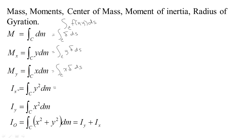Then we talked about second moments. These first moments were important in calculating a balance point — x-bar equals the moment about the y-axis divided by the mass, basically an average value for x. And y-bar equals the moment about the x-axis divided by the mass. So these were good for calculating balance points, which helped us represent our two-dimensional wire as though all the mass were concentrated at a single point: the center of mass.